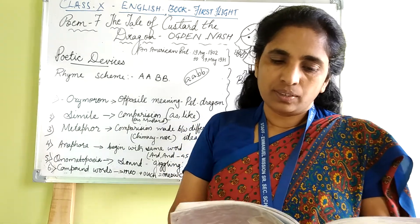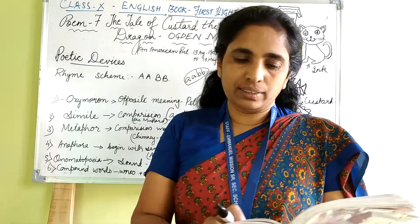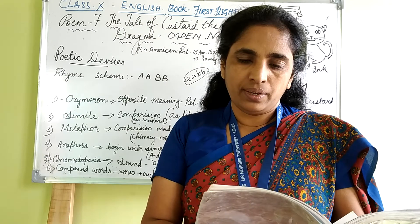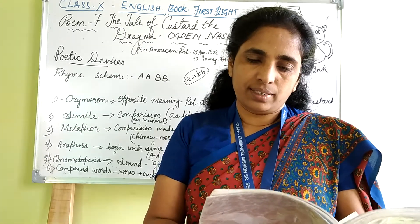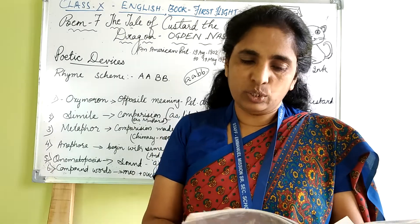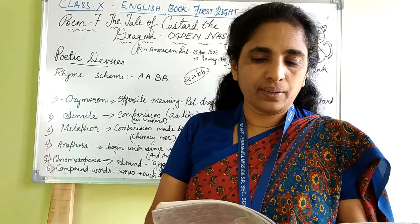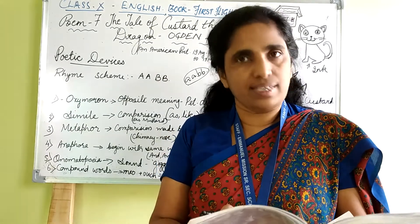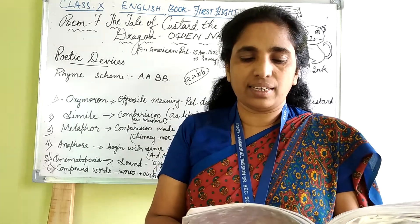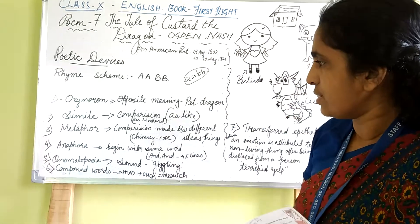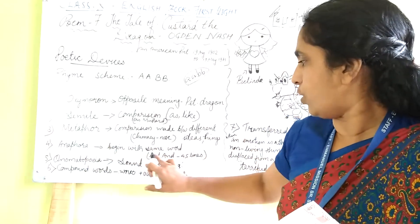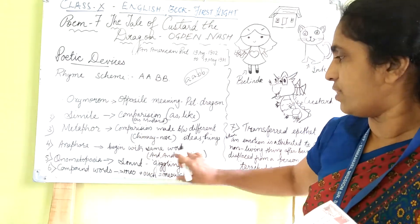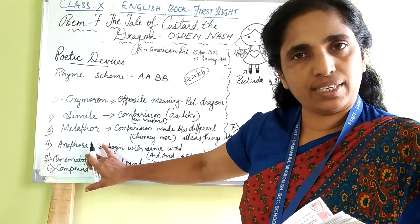Coming to the fourth line of the first stanza: 'and a really, truly, little pet dragon.' The words 'really' and 'truly' are used for a rhyming effect — that is called poetic license. Also, 'and' is used at the start of both the third and fourth lines. Same word repeating at the beginning is called anaphora. Anaphora means beginning with the same word.